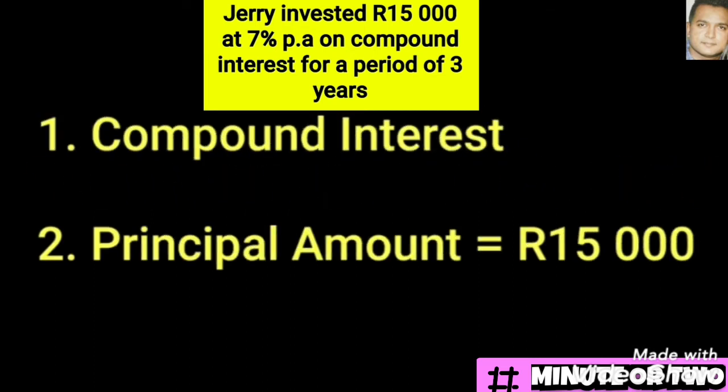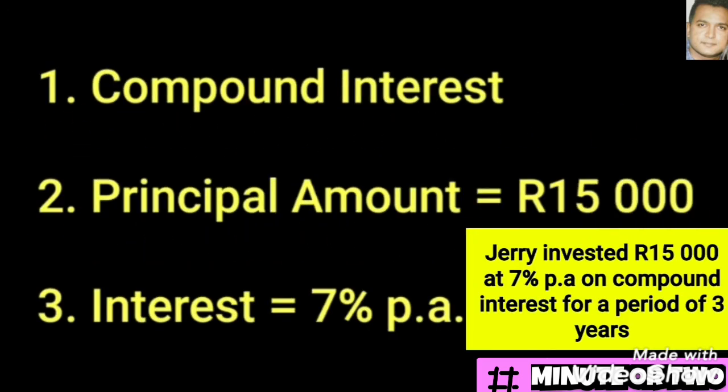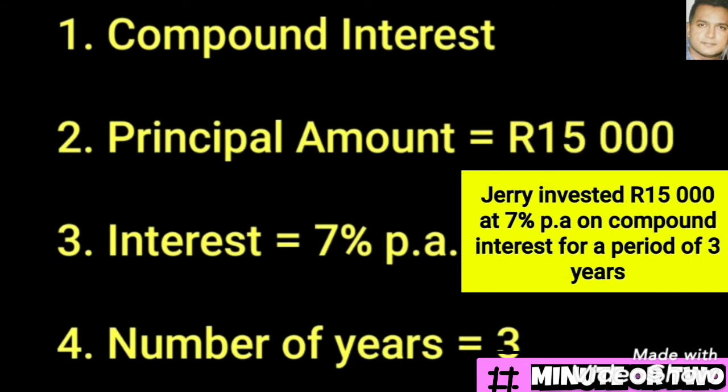There are four distinct elements in this problem. First, it is a compound interest question. Second, the principal amount is R15,000 — that's the actual amount invested or taken on loan. Third, the interest rate is 7%; note that sometimes it can be a decimal, so enter it properly in your calculator with the percentage sign. Fourth, we are given the number of years, which can come in formats such as years or months.